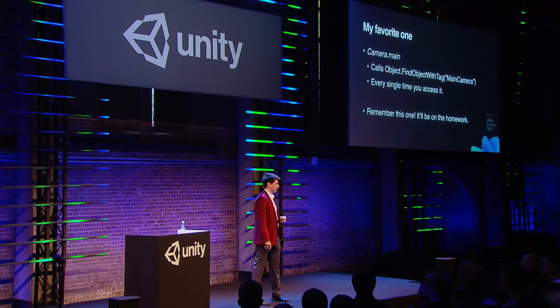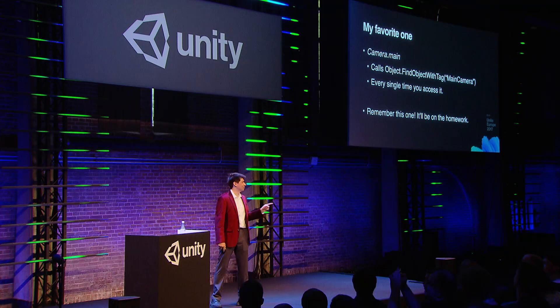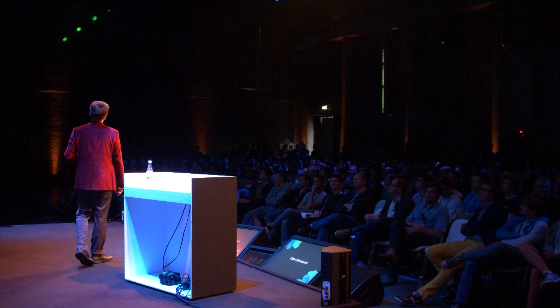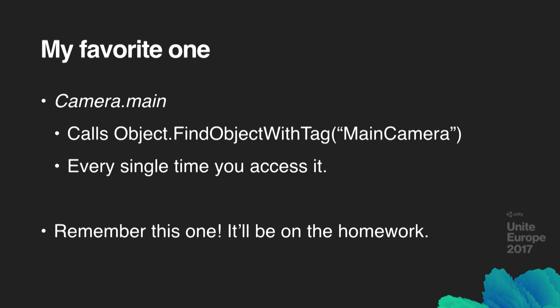Now for my favourite one: Camera.main, which looks innocuous. Every time you call Camera.main, it is not a direct reference to the main camera — we are actually calling Object.FindObjectWithTag every time you access this property. Remember this one, because I'm going to come back to it in a little while.